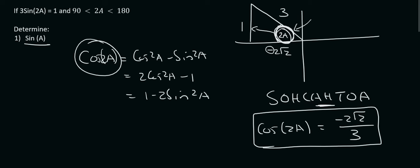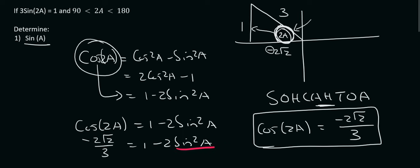So we could use this expansion. So we could say cos 2A is equal to 1 minus 2 sin squared A, where cos 2A is minus 2 root 2 over 3 equals to 1 minus 2 sin squared A. So now all that we need to do is just get that part by itself because that's sin A.